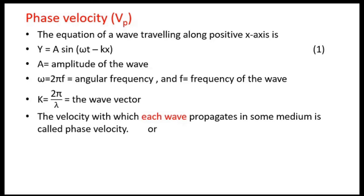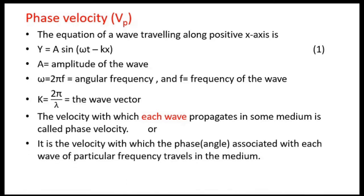The velocity with which each wave propagates in some medium is called the phase velocity, or it is the velocity with which the phase — the angle associated with each wave of a particular frequency — travels in a medium. In mathematics, for a trigonometric function like sine θ, θ is the angle. Similarly here, the phase represents the angle associated with the wave and is given by: phase = ωt − kx.